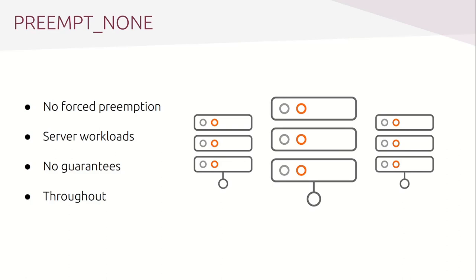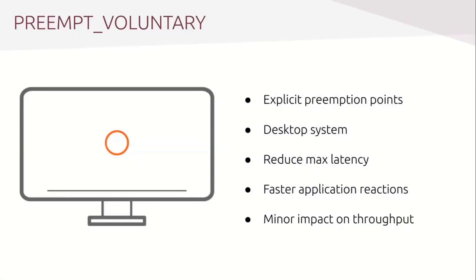The moment developers started looking at expanding the code surface for preemption, the PREEMPT_VOLUNTARY mode was developed. This preemption mode is intended for desktop use because it provides quicker application reactions to user input, and it enables voluntary preemption points in kernel code. A low priority process can voluntarily preempt itself even if it's in kernel code executing a system call. The effect of these voluntary explicit preemption points is to reduce the maximum latency on rescheduling and provide faster application reactions. Applications will be perceived to run more smoothly even when the system is under load, and the price paid is slightly lower throughput.